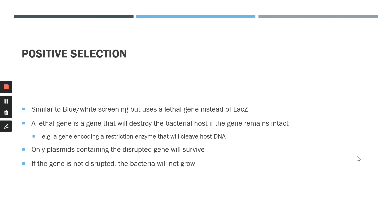The next selection method is positive selection, which is very similar to blue-white screening but utilizes a lethal gene instead of LACZ. A lethal gene can destroy the bacterial host — for example, by encoding a restriction enzyme that cleaves host DNA. If there is no insert DNA fragment to disrupt the lethal gene, the bacterial host will not survive and no colonies will grow. Therefore, the only colonies that grow are those with vector DNA containing an inserted DNA fragment. However, this method also does not differentiate between the correct or incorrect insert.